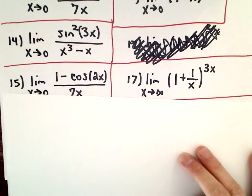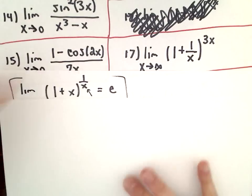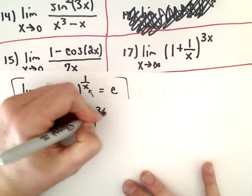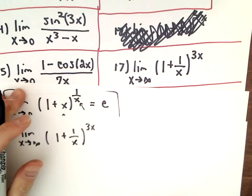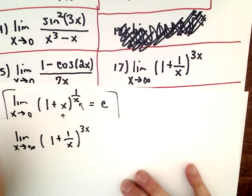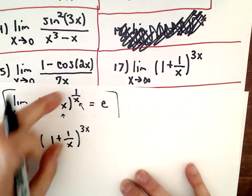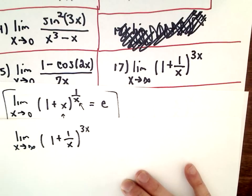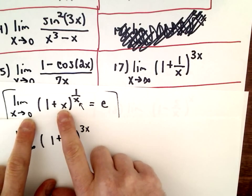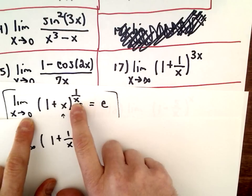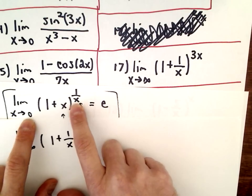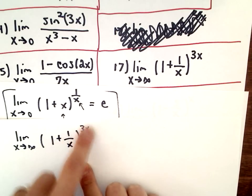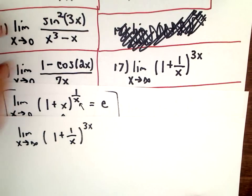Only 2 to go. Problem 17: we have the limit as x approaches infinity of (1+1/x)^(3x). This one feels a little different. Let's notice the differences: instead of the limit going to zero, now it goes to infinity. Instead of x, we have 1/x. Instead of the power being 1/x, we have a number multiplied by x. It still works out. As x approaches zero, 1/x goes to infinity. As x approaches infinity, 1/x goes to zero. So this term goes to zero, and this exponent goes to infinity. It just looks a little different.